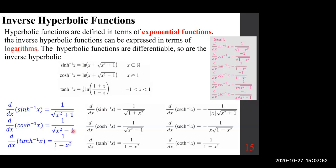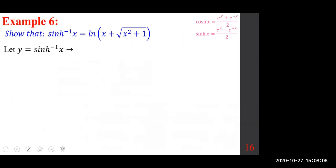The first thing I want to do is go over the definition and show why it involves a natural log. If we can show it for one, we can show it for all. So let's show that sinh⁻¹(x) = ln(x + √(x² + 1)).